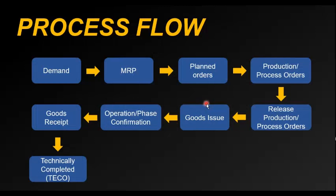Only after the production order has been released are subsequent functions like goods issue, confirmation, and goods receipt allowed. After release, the next step is to consume the raw materials or components from the storage locations. These components are picked from the storage location and moved to the shop floor. There are two terminologies to note here: in discrete manufacturing with production orders, we use 'operations'; in process orders, we use 'phases'.